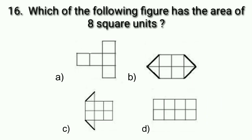Question number 16 is: which of the following figures has an area of 8 square units? We are given some figures that contain square boxes. Let one side of one square box be 1 unit, so the area of one square box will be 1 square unit. Now let's count the number of square boxes in each figure to find which one has an area of 8 square units.